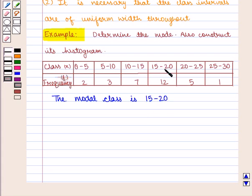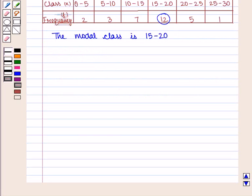Since it has the maximum frequency, that is 12, we know that mode M0 is given by L1 plus (Fm minus F1) upon (twice of Fm minus F1 minus F2) into I.